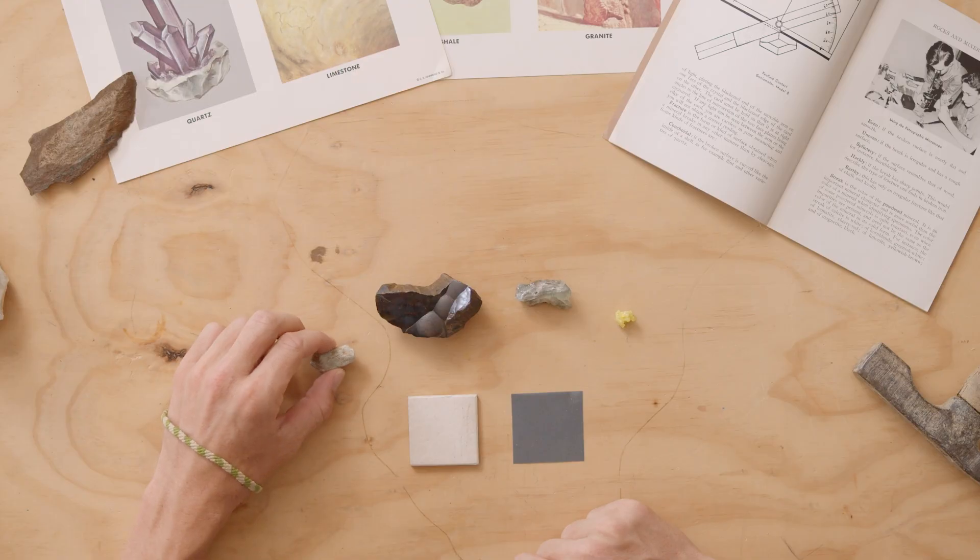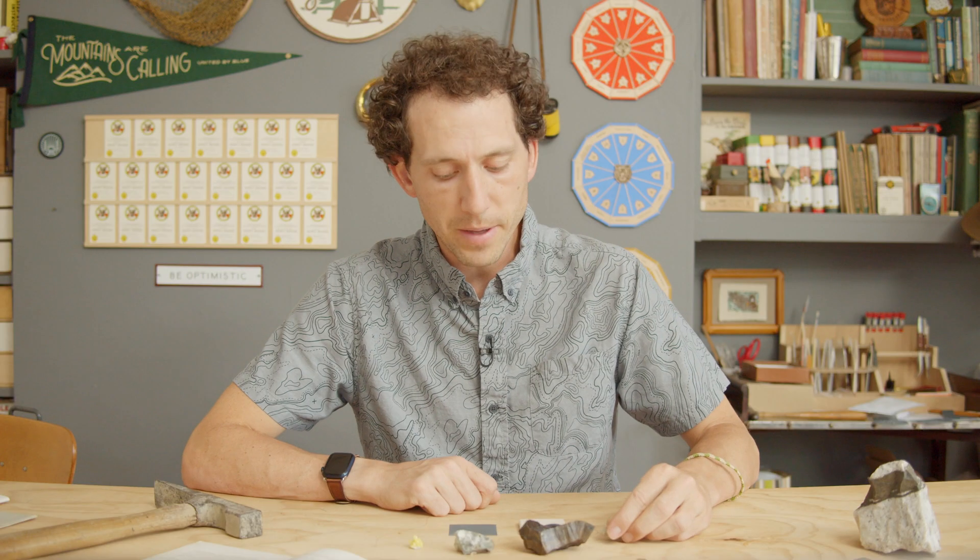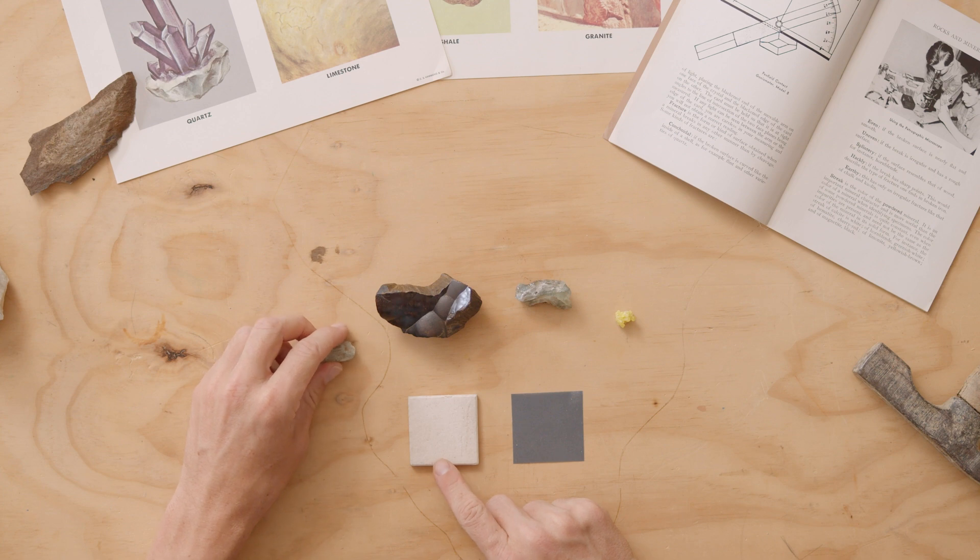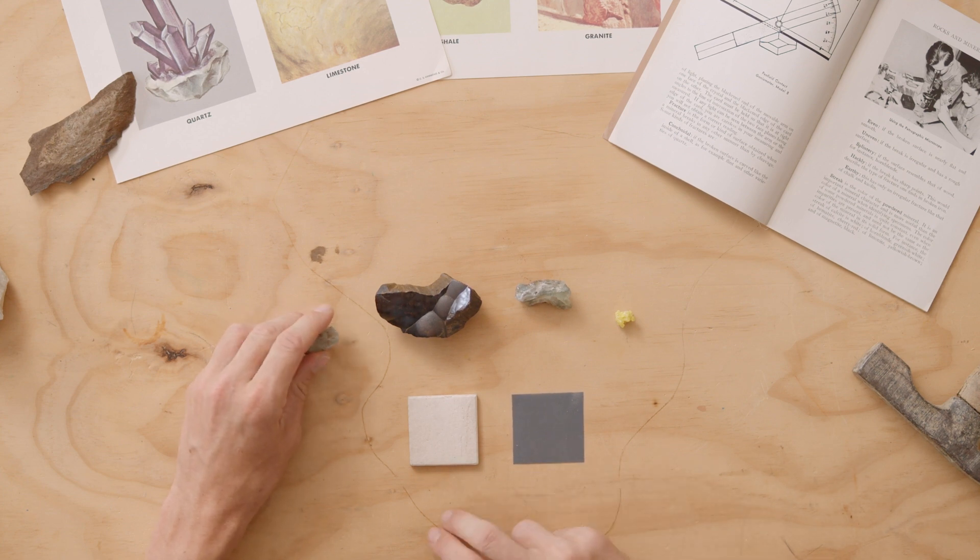When identifying rocks and minerals, it can be helpful to identify the streak color. The way to do that is to rub the mineral on either a piece of white ceramic or black ceramic. In this case, I'm just using dark sandpaper.